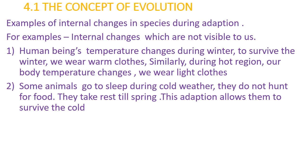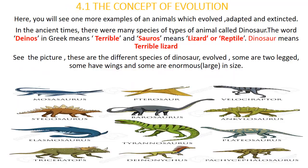Examples of internal changes in species during adaptation — these are changes not visible to us. For example, a human being's body temperature changes during winter; to survive, we wear warm clothes. Similarly, during hot weather, body temperature changes, so we wear light clothes. Some animals go to sleep during cold weather — they do not hunt for food and take rest till spring. This adaptation allows them to survive the cold.